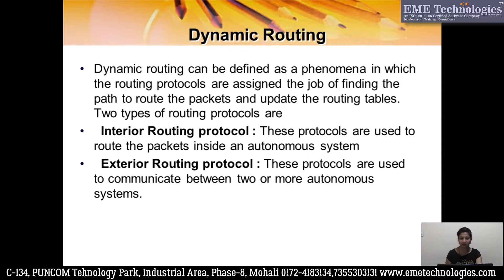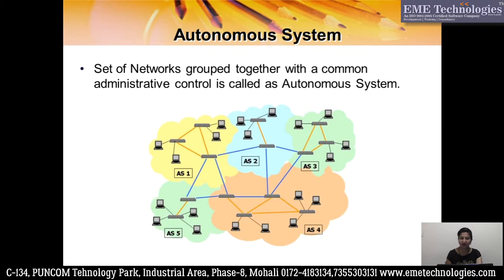Autonomous system kya hai: jab aapke paas ek complete network hai, us complete network ko aap kuch groups mein divide kar lete hai and that particular group is under one administrative control, to usse hum autonomous system kehte hai. As you can see in this picture, there are 5 autonomous systems - a single large network divided into separate categories, each under different administrative control. So, a small part of a large network is an autonomous system. IGP is the protocol that works within an autonomous system, and EGP is the protocol that connects two different autonomous systems.